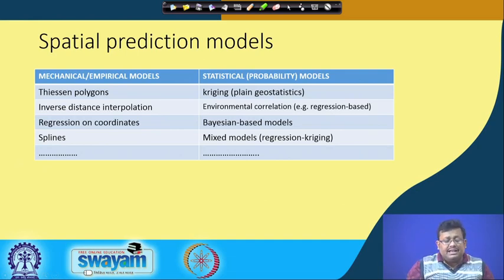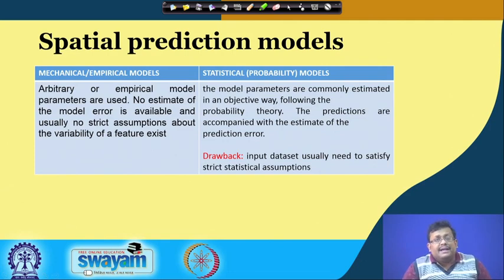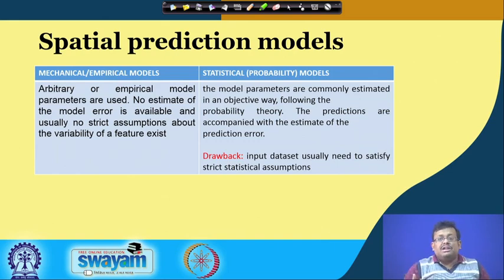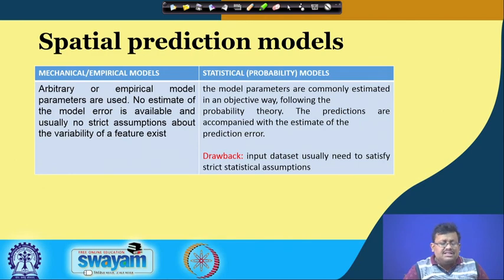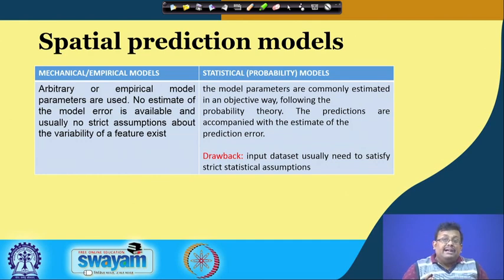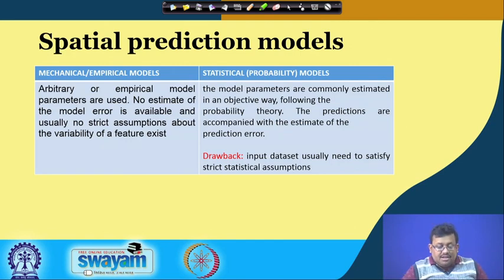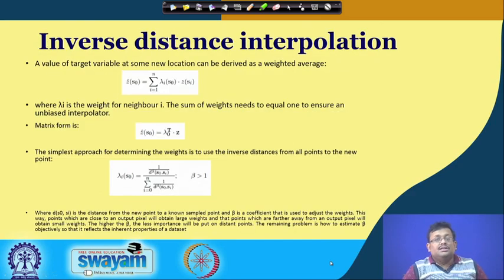The difference between mechanical and statistical models: mechanical models use arbitrary or empirical model parameters, no estimate of model error is available, and usually no strict assumptions about variability exist. In contrast, statistical probabilistic models estimate parameters objectively following probability theory, and predictors are accompanied by an estimate of the prediction error. The drawback of probabilistic models is that input datasets usually need to satisfy strict statistical assumptions.